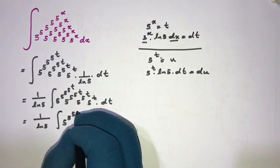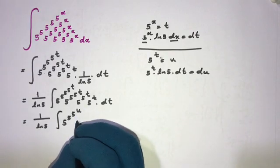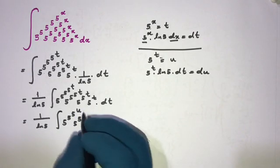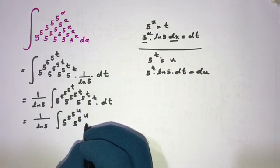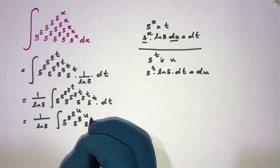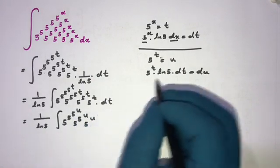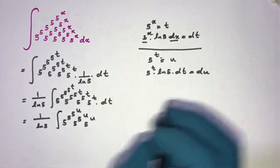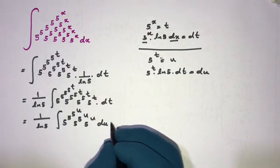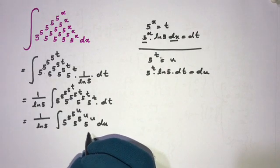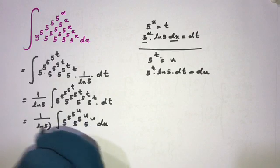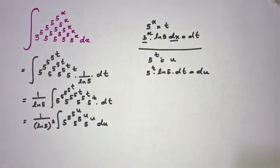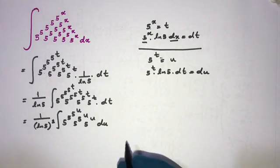Pulling the constant out, we now have (1 over ln 5)² times the integral of 5 to the 5 to the 5 to the u, times 5^u du. Since ln 5 is a constant, we write it outside the integral sign.